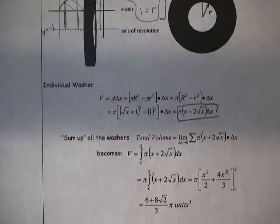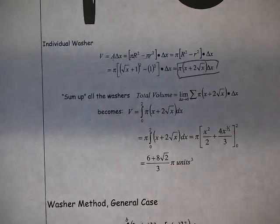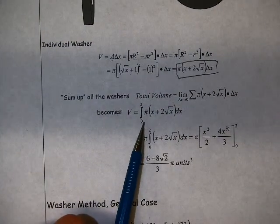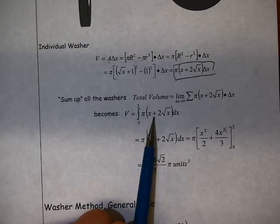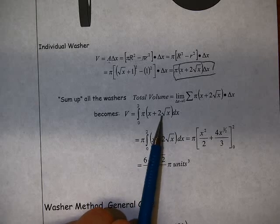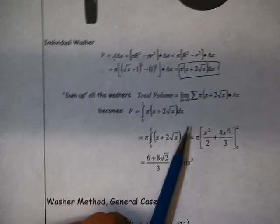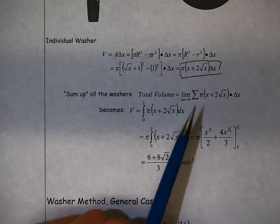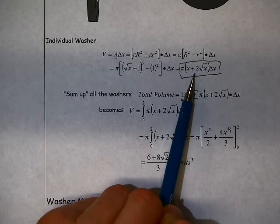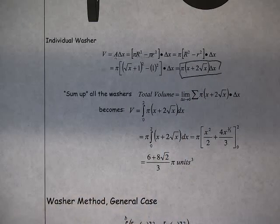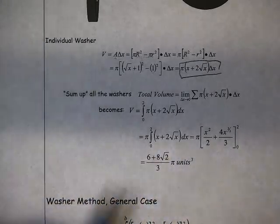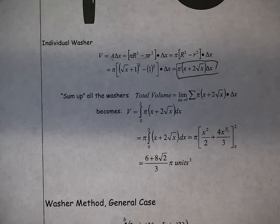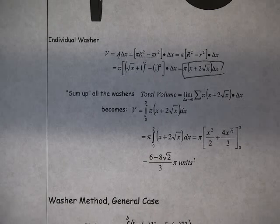Once we do that, we sum them all up, kind of a Riemann sum type process. We get this integral here, the integral from 0 to 2 of pi, x plus 2 square root of x dx. You can see that we're just integrating the individual washer area times the thickness. And again, we find antiderivatives, evaluate at 2, evaluate at 0, subtract. And we get kind of a messy looking answer, but it's 6 plus 8 root 2 all over 3 times pi cubic units.